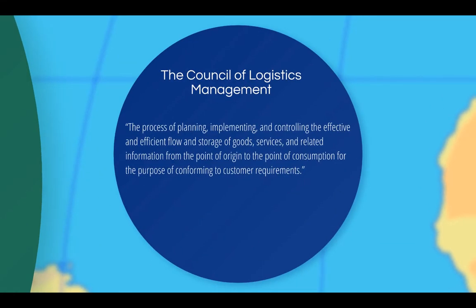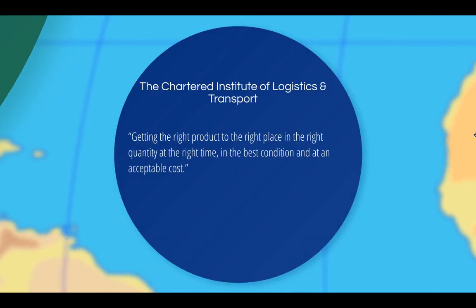By comparison, the Council of Logistics Management defines logistics as the process of planning, implementing, and controlling the effective and efficient flow and storage of goods, services, and related information from the point of origin to the point of consumption for the purpose of conforming to customer requirements. Finally, the Chartered Institute of Logistics and Transport defines logistics as getting the right product to the right place in the right quantity at the right time, in the best condition, and at an acceptable cost.